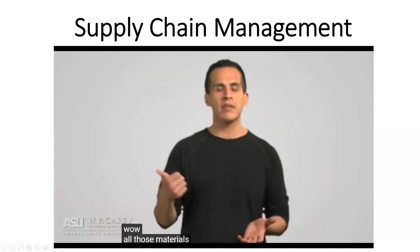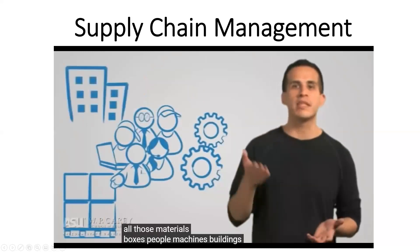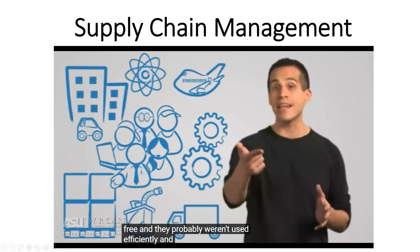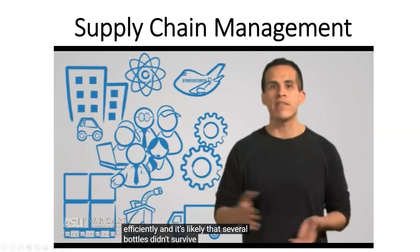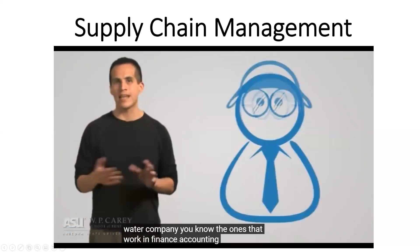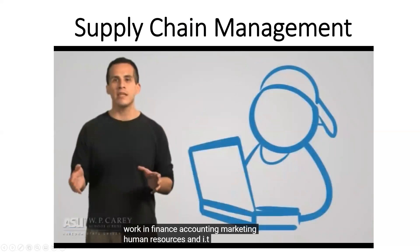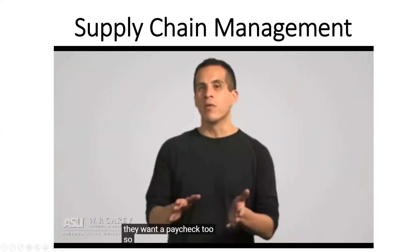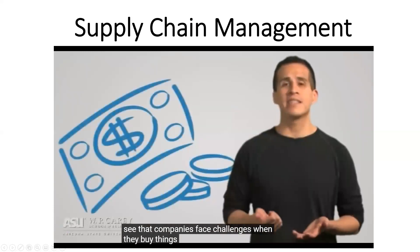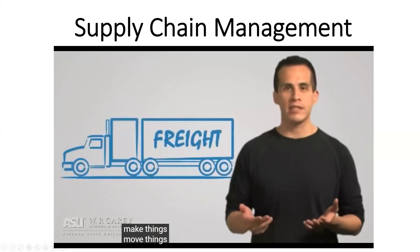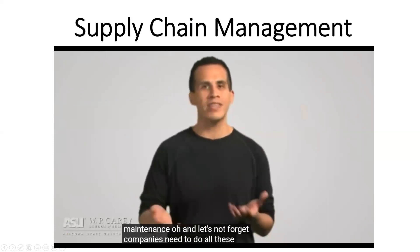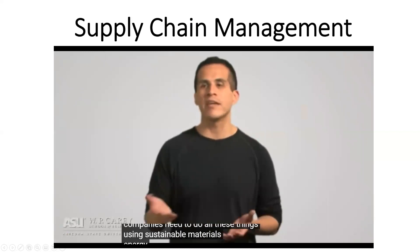All those materials, boxes, people, machines, buildings, energy, fuel, and vehicles cost money. Those things weren't free, they probably weren't used efficiently, and several bottles likely didn't survive the journey to the consumer. The employees at the water company — the ones that work in finance, accounting, marketing, human resources, and IT — they want a paycheck too. Through that simple example, we're beginning to see that companies face challenges when they buy things, make things, move things, sell things, and service things — which includes repair and maintenance. Companies also need to do all these things using sustainable materials, energy, and methods.